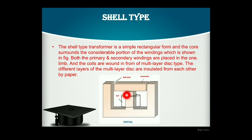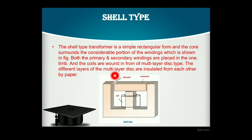In the inner section there is the low voltage winding, as in the core type transformer, and in the outer section there is the high voltage winding. The coils are wound in the form of multi-layer disc type. These different layers of the multi-layer disc are insulated from each other by paper insulation. This type of transformer is mainly used for low voltage operation in some electronic circuits, while the core type transformer is mainly for large transformers.